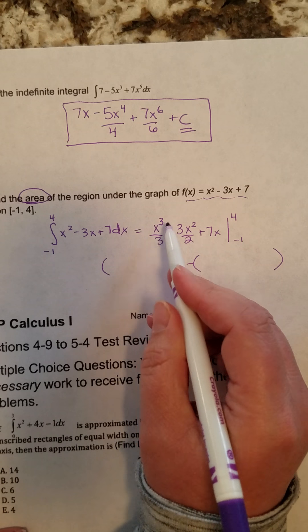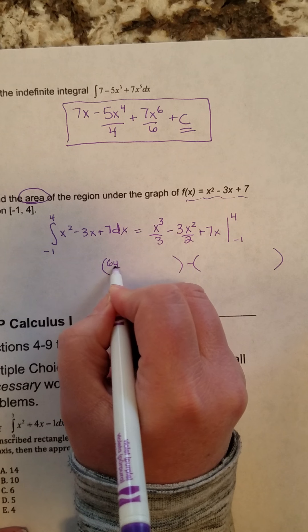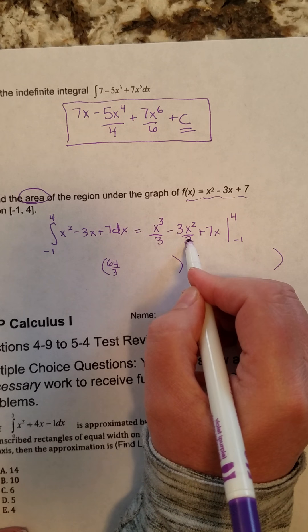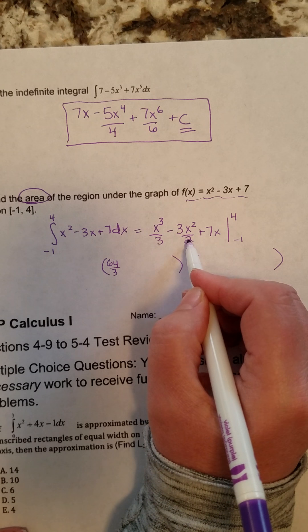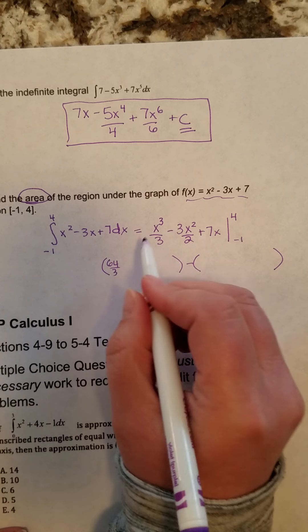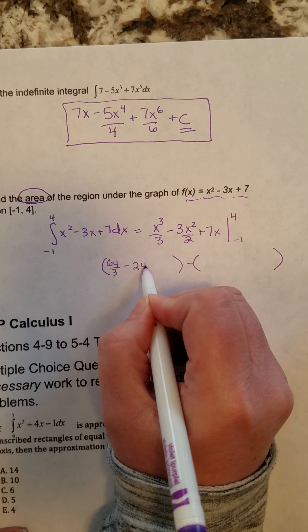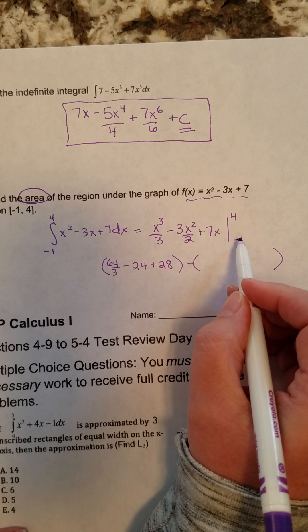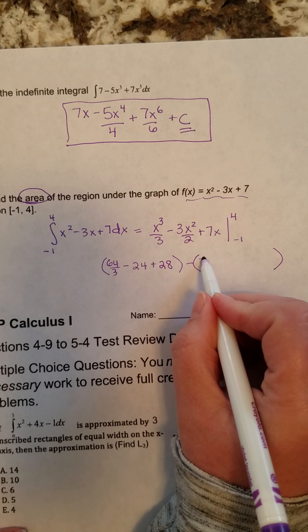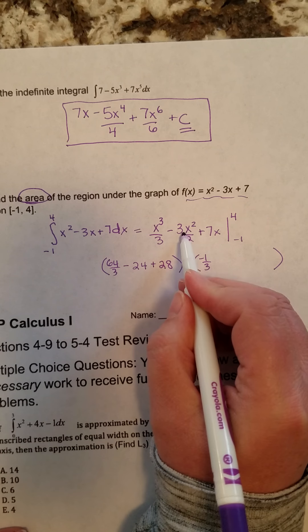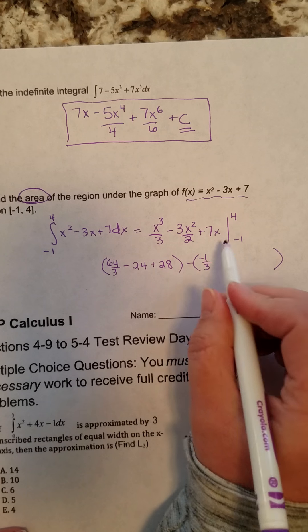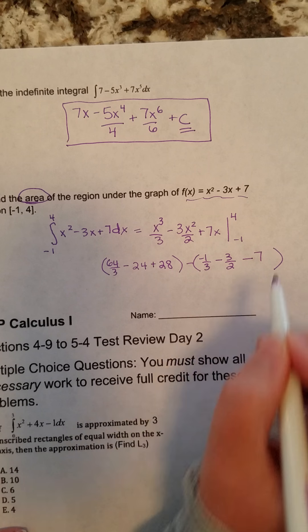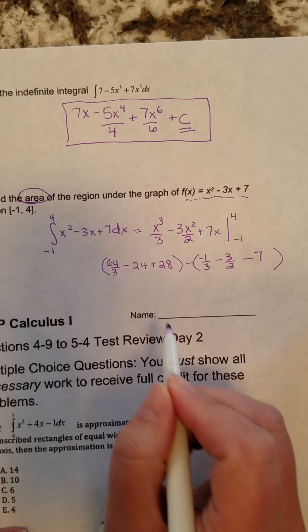Plugging the top number in, 4 cubed is 64 thirds. 4 squared here is 16. 16 divided by 2, though, 16 divided by 2 is 8 times 3, which is minus 24. And then 7 times 4 is 28. Now we plug the negative 1 in. Negative 1 cubed is negative 1 third. Negative 1 squared is 1 times negative 3 halves is negative 3 halves. And then 7 times negative 1 is minus 7.